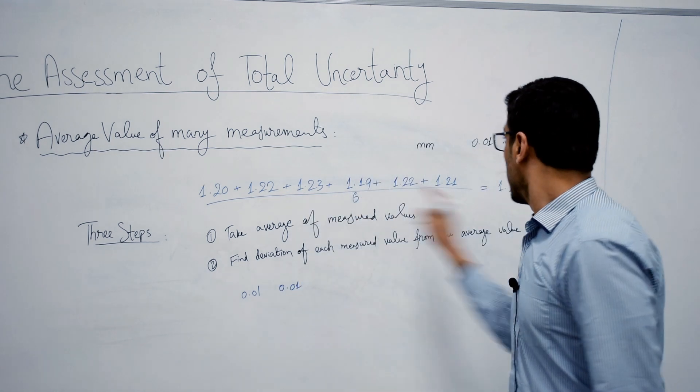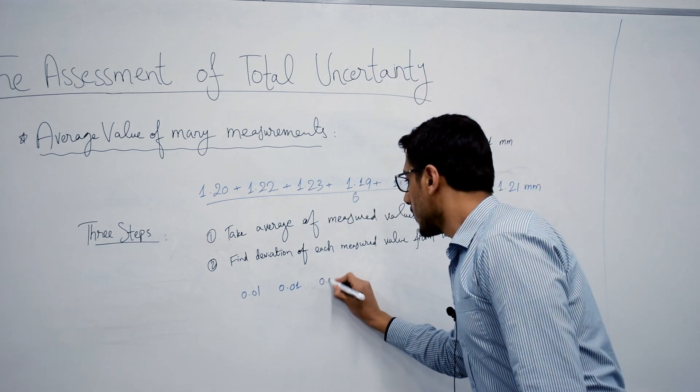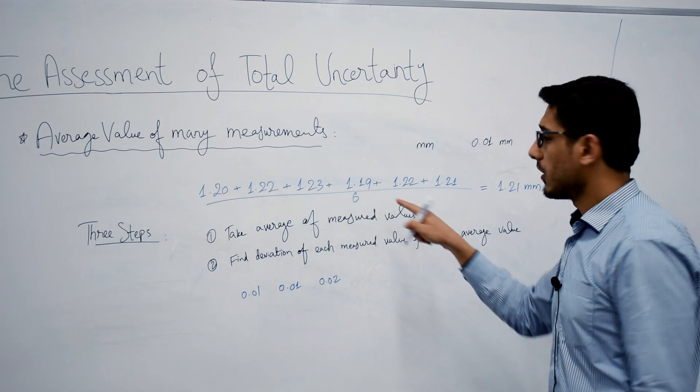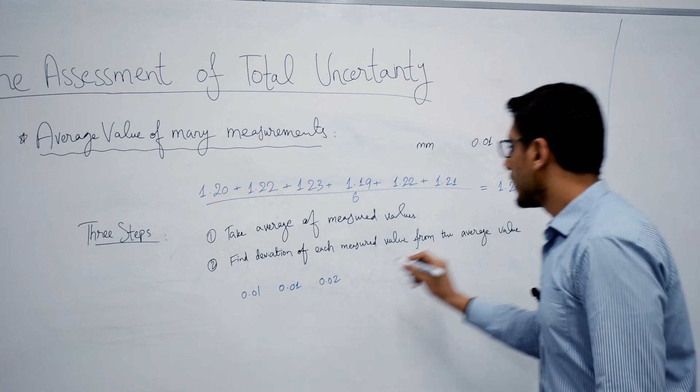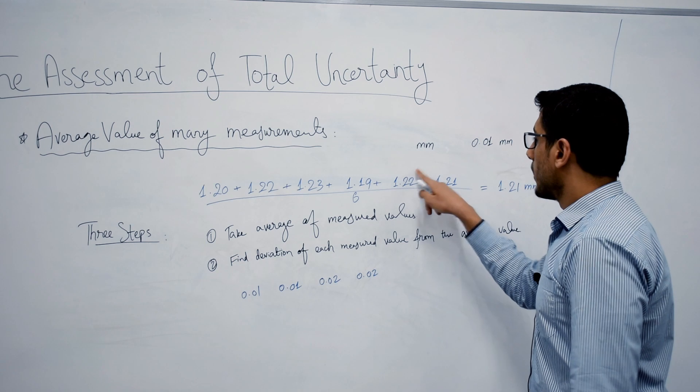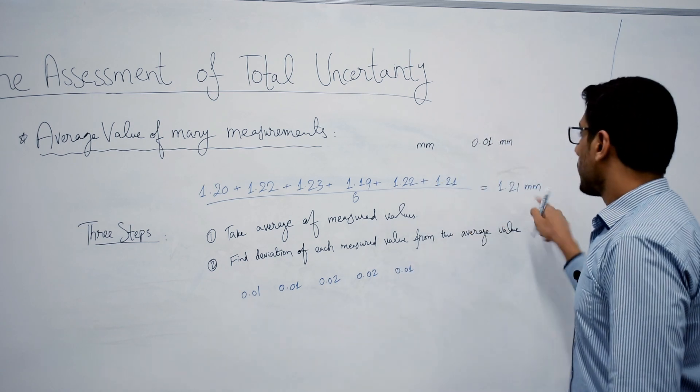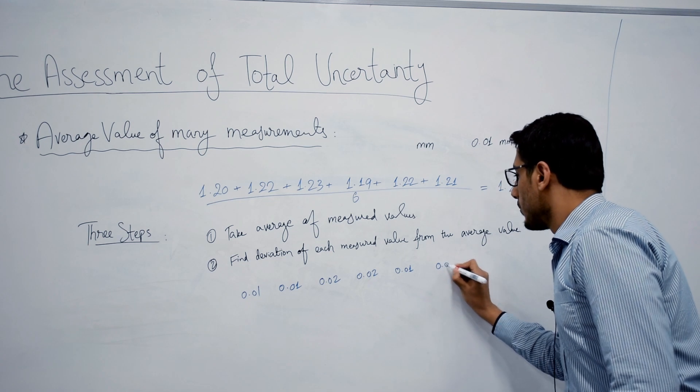And the third measurement has a deviation of 0.02 mm, just subtracting 1.23 minus 1.21. Again 0.02, don't care about the sign. 1.22 minus 1.21 is 0.01, and 1.21 minus 1.21 is 0.00.